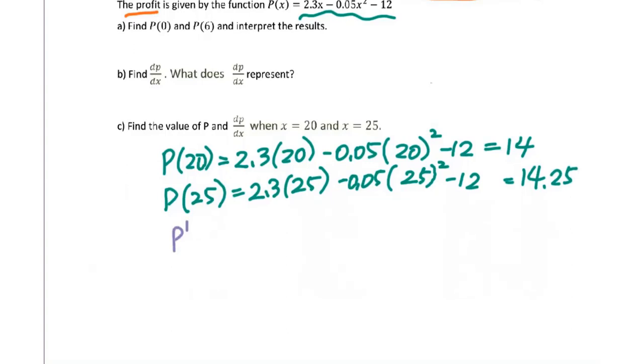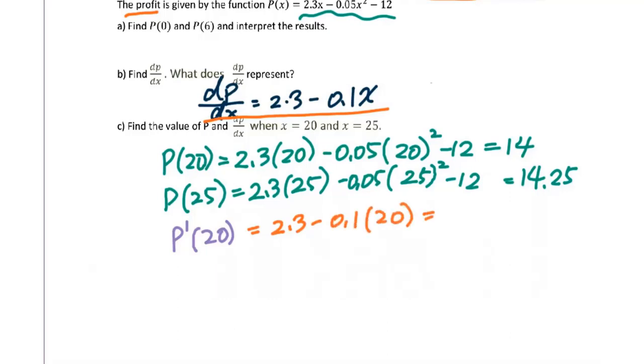So for P'(20), from part b we already got dP/dx equals 2.3 minus 0.1x. So we plug in: 2.3 minus 0.1 times 20 equals 0.3. For P'(25), you will get 2.3 minus 0.1 times 25, that equals negative 0.2.